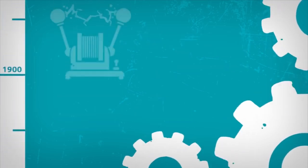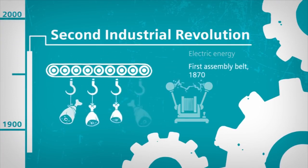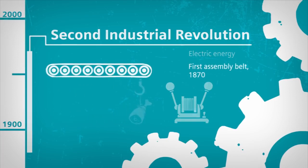The late 19th century saw the rise of electrical engineering and mass production. The first moving belt conveyor was used as long ago as 1870 in the slaughterhouses of Cincinnati, Ohio.